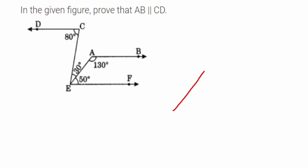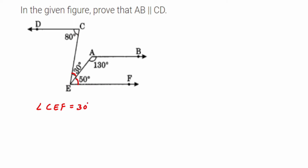Suppose that this line CE is a transversal. I want to prove that CE is a transversal of EF and DC. Now look at this angle: 30 and 50. If we add up these two angles, angle CEF is 30 degree plus 50 degree, which is equal to 80 degree. So this complete angle gives us 80 degree. Look at angle DCE, which is also 80 degree.